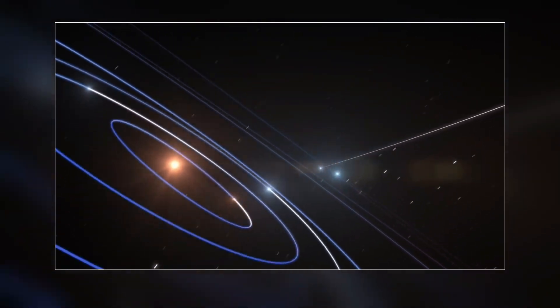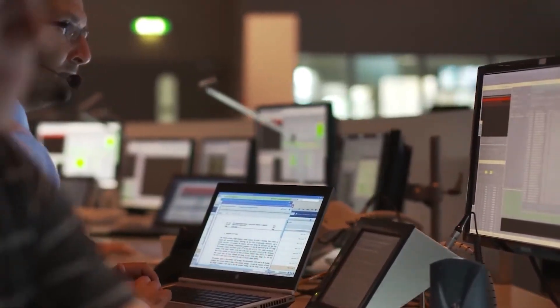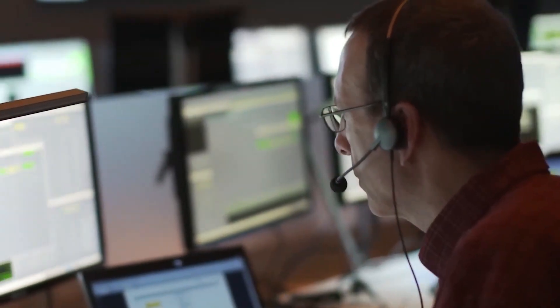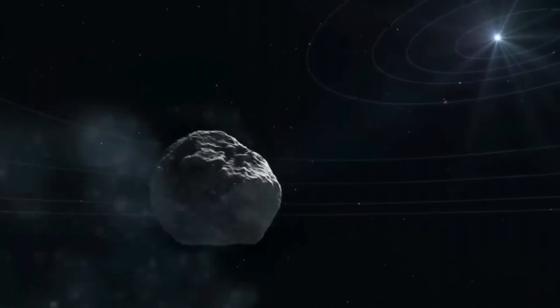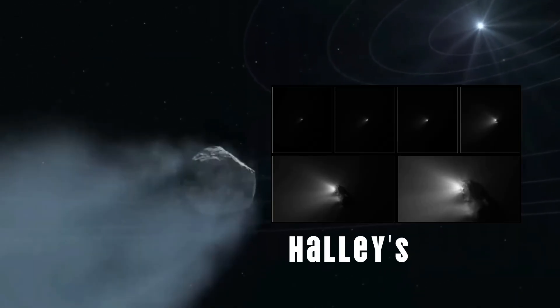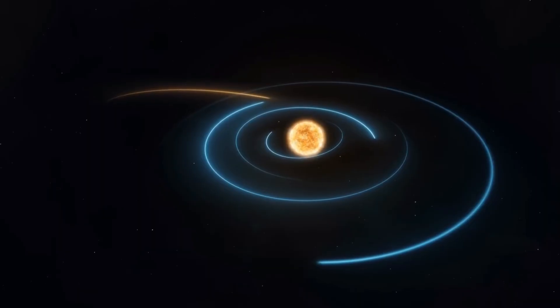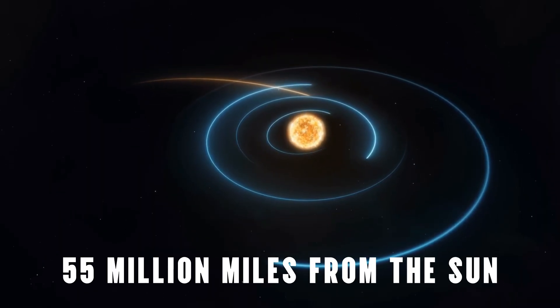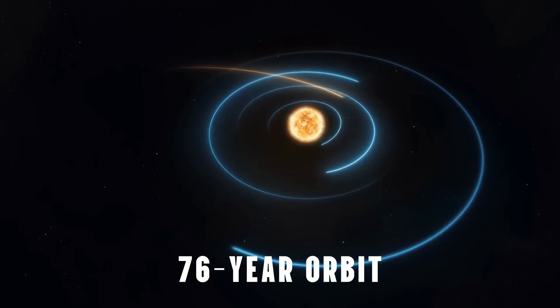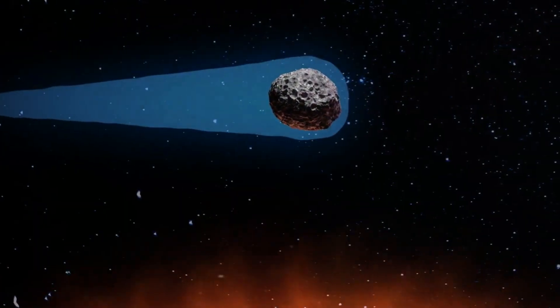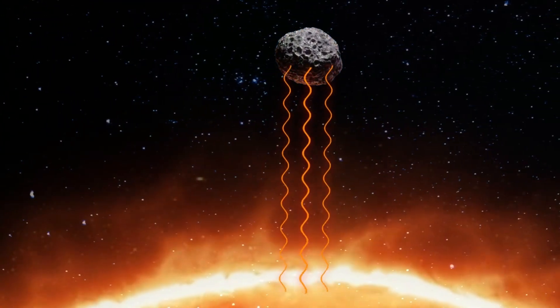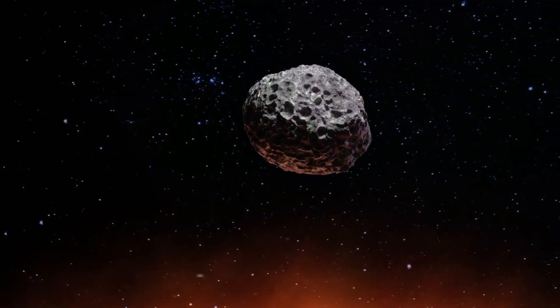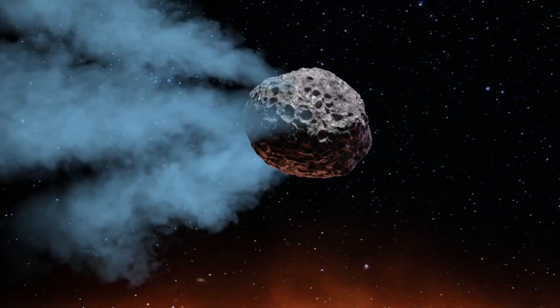To understand why this matters, consider how regular comets in our solar system behave according to well-established patterns. When a typical comet approaches the sun, it follows predictable physics. Halley's comet, for example, gets no closer than about 55 million miles from the sun during its 76-year orbit. As it approaches, solar radiation heats the frozen gases and water ice on its surface, causing them to sublimate, that's when a solid turns directly into gas without becoming liquid first.